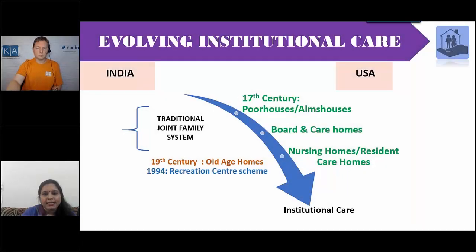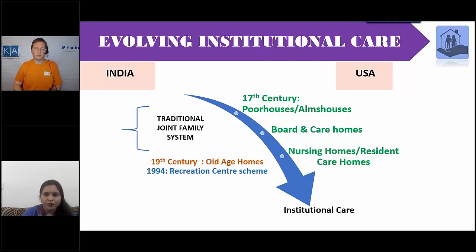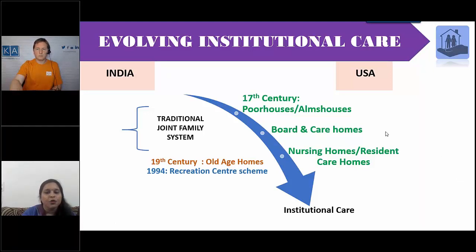The differences in scenario at the care institutions of both countries can be attributed to their history of evolution. The recreation center scheme in India was introduced in the early 90s in northern India. In retrospect to the West, most of the recreation centers do not have assistive programs. The number of people visiting these centers is also very less — according to my study, only 20 percent visited these centers regularly.